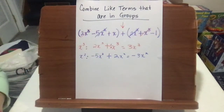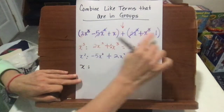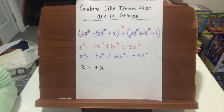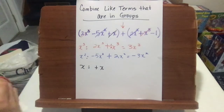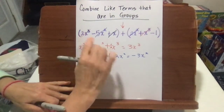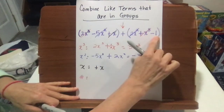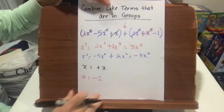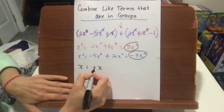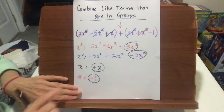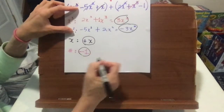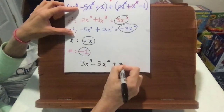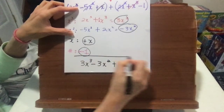In the first group, we still have an x, but we don't have anything in the second group to add to it that is like terms. So this x just comes down — it's a positive x, so we write positive x and keep it. Lastly, we go to numbers. There are no number terms in the first group, but we are adding a negative 1. So we take that as a negative 1. Now we take all of the terms that are left and write them as the final answer: 3x cubed minus 3x squared plus x minus 1. And that's your final answer for combining like terms.